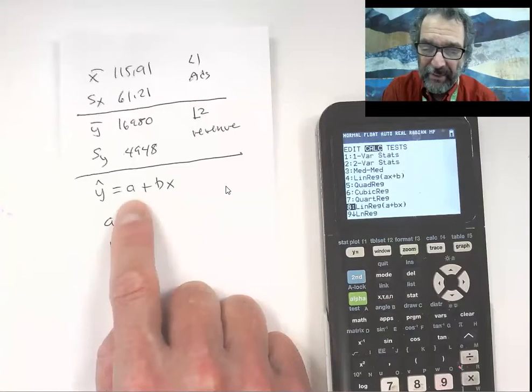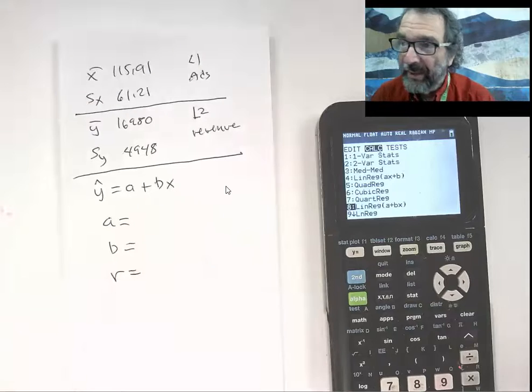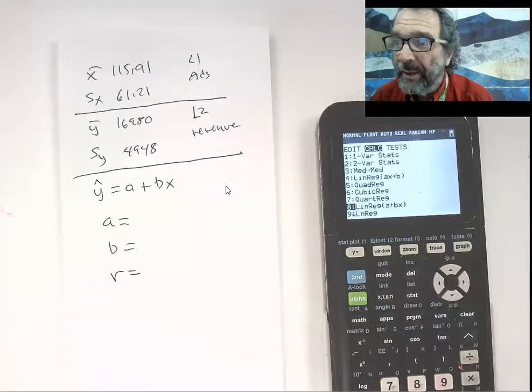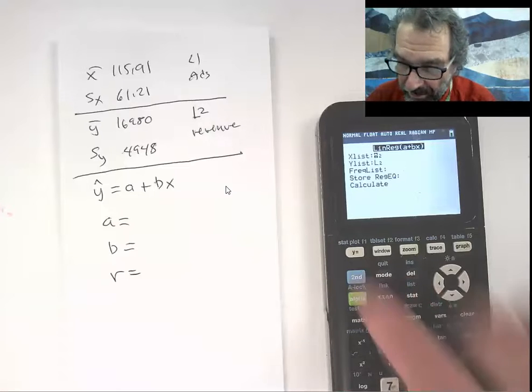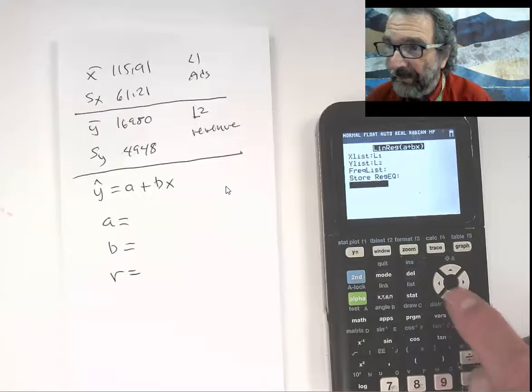Lots of times in stats you write the number first and the slope times x second, so we'll use that for now. Either one gives you the right slope and intercept. Here we go. I have to say it's list one for x, list two for y, go down, calculate.